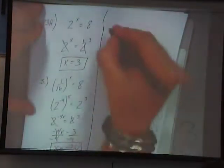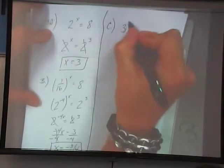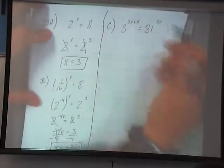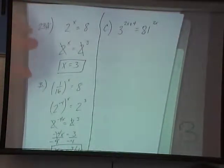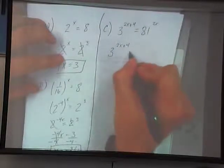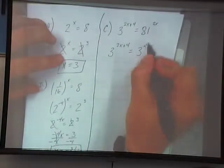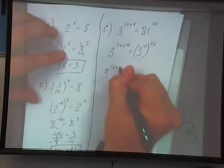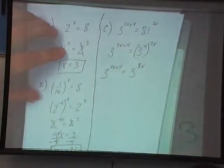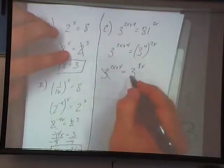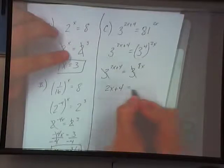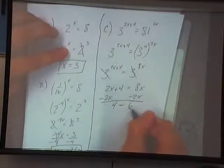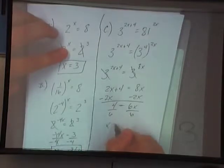Alright, C. 3 to what power is 81? 4. Turn 81 into 3 to the fourth power. Power over power we multiply. So it will be 3 to the 2x plus 4 is equal to 3 to the 8x. Drop the bases. 2x plus 4 is equal to 8x. Minus 2x. 4 is equal to 6x. So x is equal to 2 thirds.